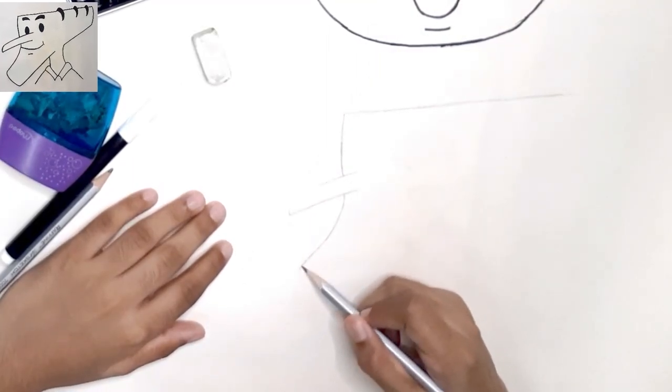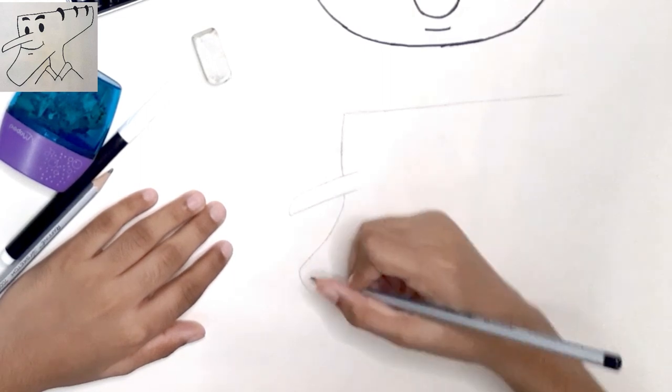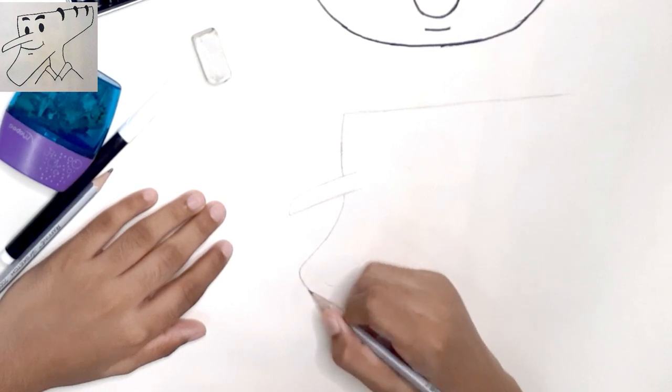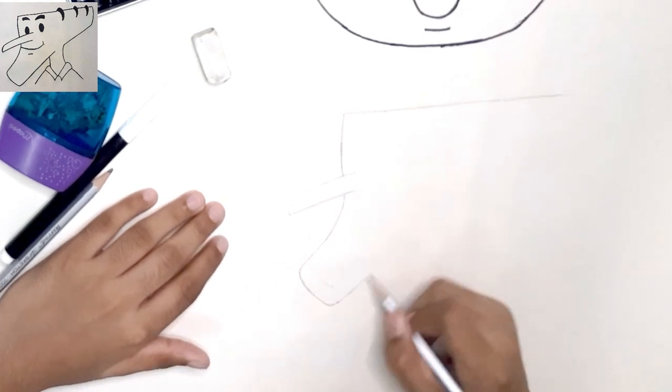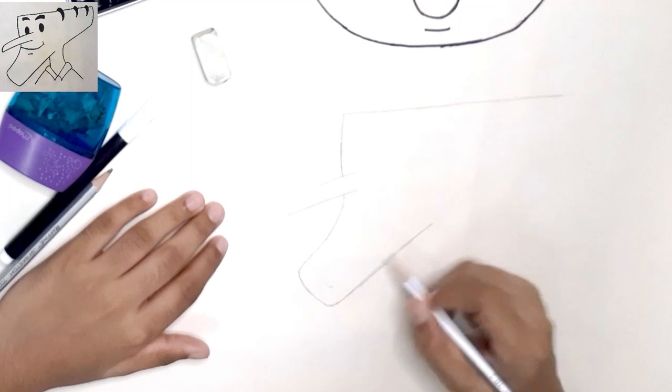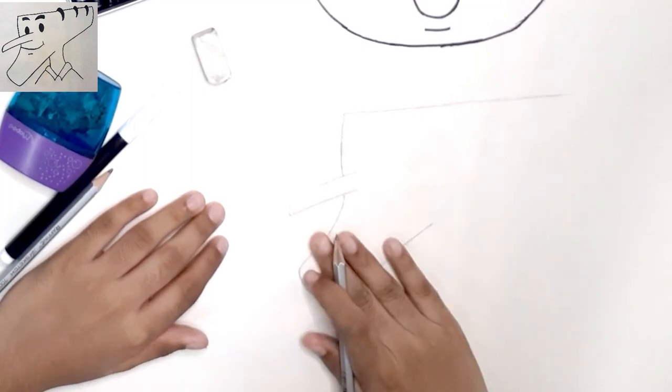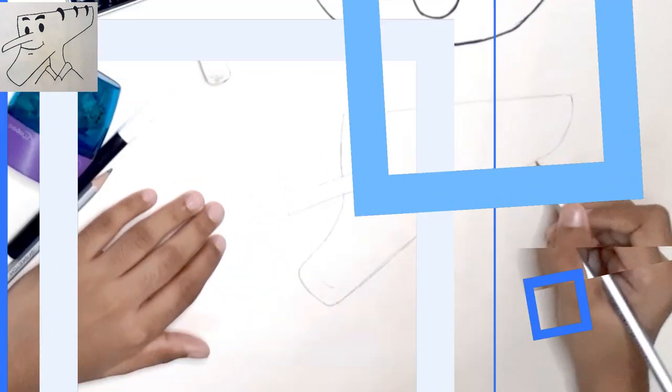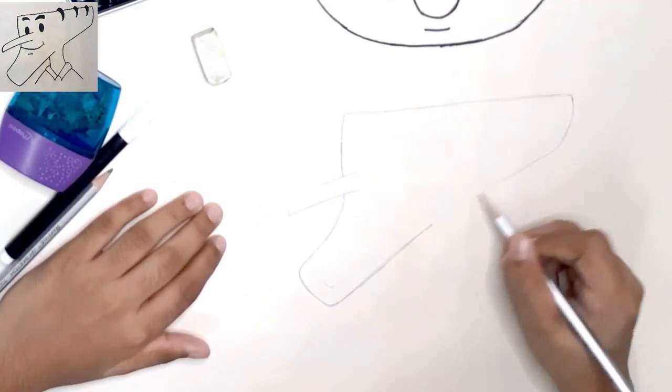He has a very square type of chin, and remember to keep these edges blunt. Do not make them perfectly sharp. Okay, so that's it for the base drawing on the front part. Now let's do the back one. Bring that all the way down to his neck.